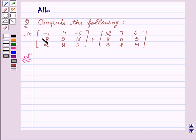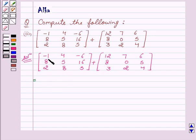Sum of these two matrices equal to minus 1 plus 12, 4 plus 7, minus 6 plus 6, then 8 plus 8, 5 plus 0, 16 plus 5.